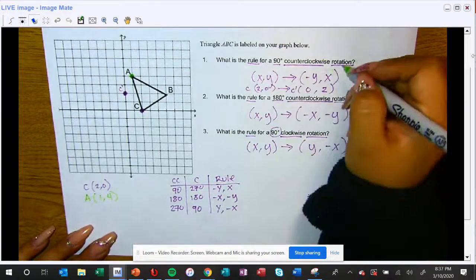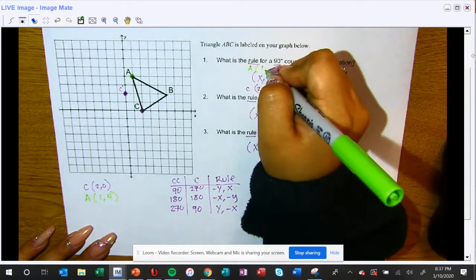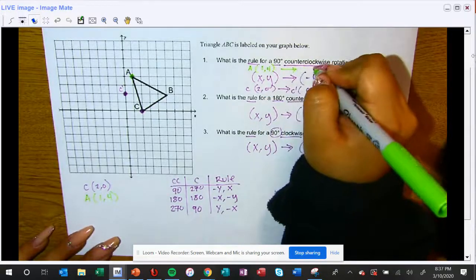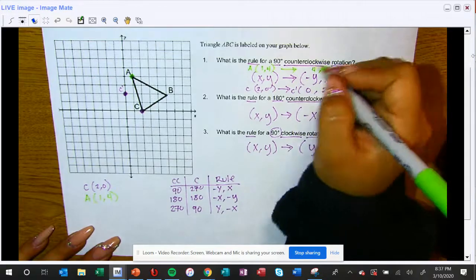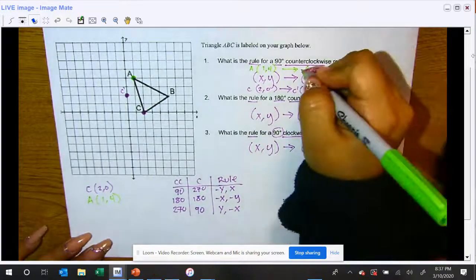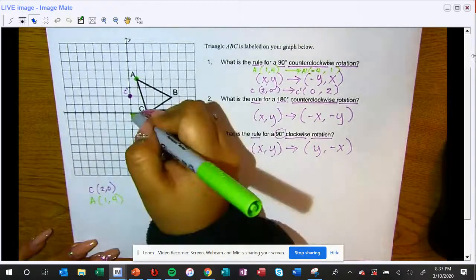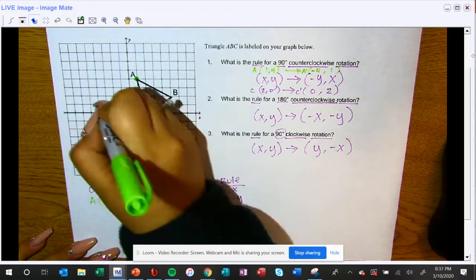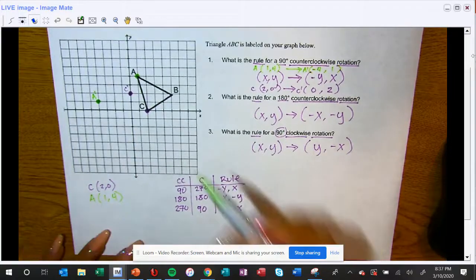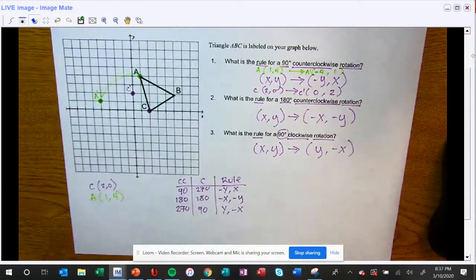I'm going to do the same thing with the 90 degree counterclockwise rotation. A is at positive one comma four. Now I'm going to switch their spots, so the four is going to come in front and now the one is in the back. Then I'm going to add negative to this number four. So A prime is now at negative four comma one. I'm going to go negative four, one, two, three, four, and positive one. Here is A prime. So it rotated this way. That is a 90 degrees counterclockwise rotation.